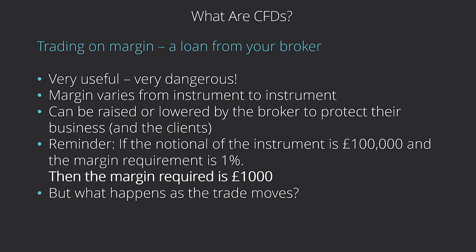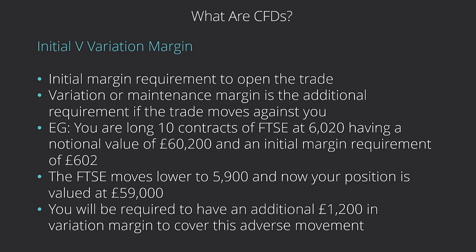There's got to be a bit of risk management in there as well. As a reminder: if the notional value of the instrument is £100,000 and the margin requirement is 1%, then the margin required is £1,000. Now there are two types of margin: initial margin and variation margin. Initial margin is the margin required to open the trade — in this case, £1,000 on a £100,000 notional at 1%.